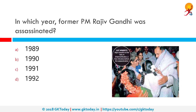In which year was former Prime Minister Rajiv Gandhi assassinated? The assassination of Rajiv Gandhi occurred as a result of a suicide bombing near Chennai in Tamil Nadu, India on Tuesday, 21st May 1991. So the correct answer is 1991. At least 14 others were also killed. It was carried out by a member of the Liberation Tigers of Tamil Eelam (LTTE), a militant organization from Sri Lanka. At the time, India had just ended its involvement through the Indian Peacekeeping Force in the Sri Lankan civil war.